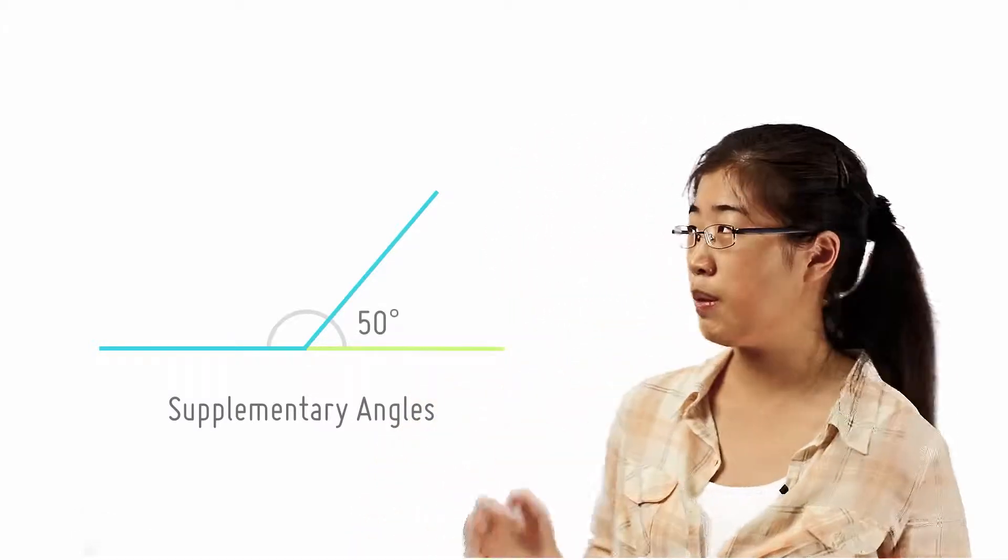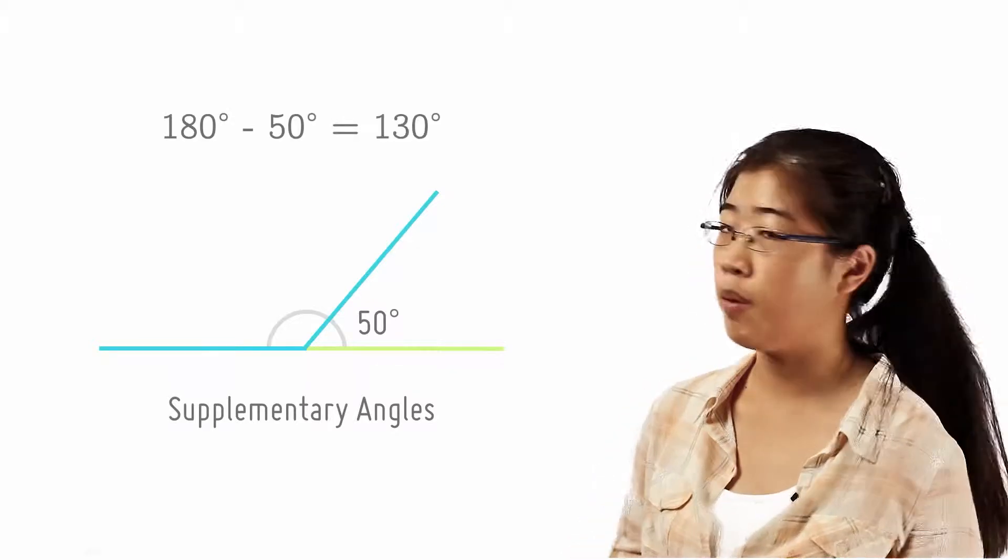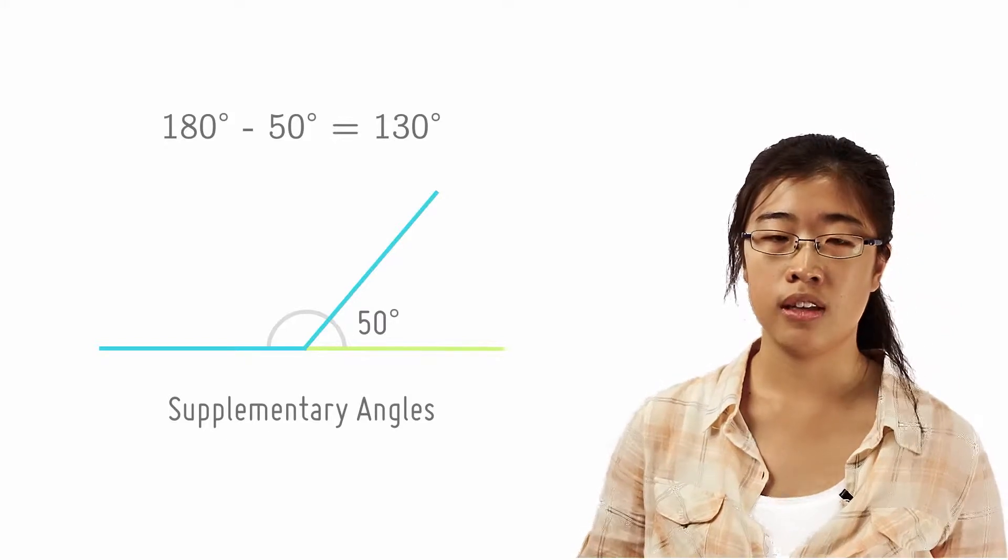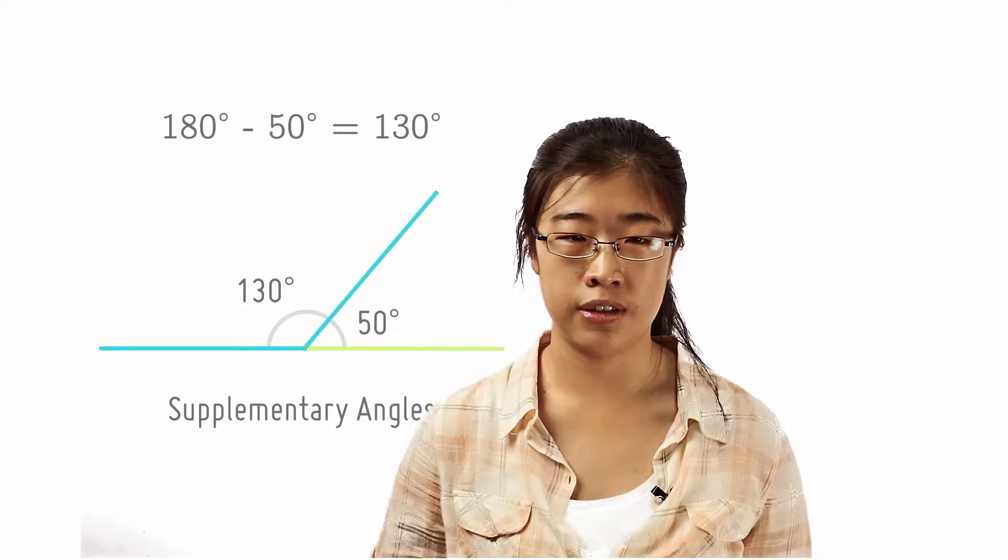For example, to find the supplementary angle of 50 degrees, we simply subtract 50 from 180 degrees to obtain 130 degrees. Thus, the supplementary angle of 50 degrees is 130 degrees and vice versa.